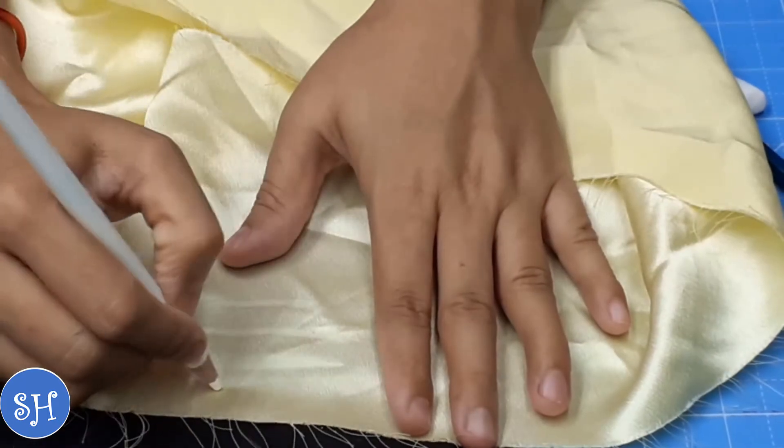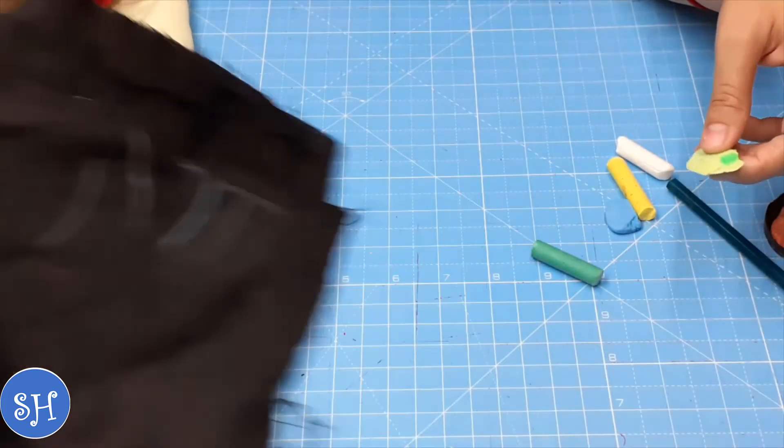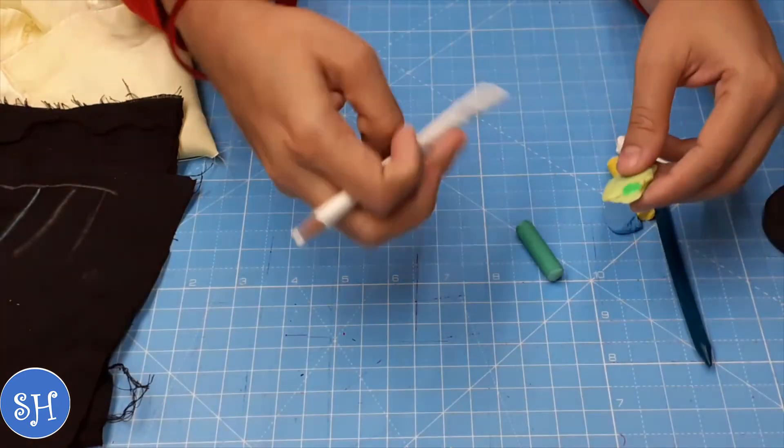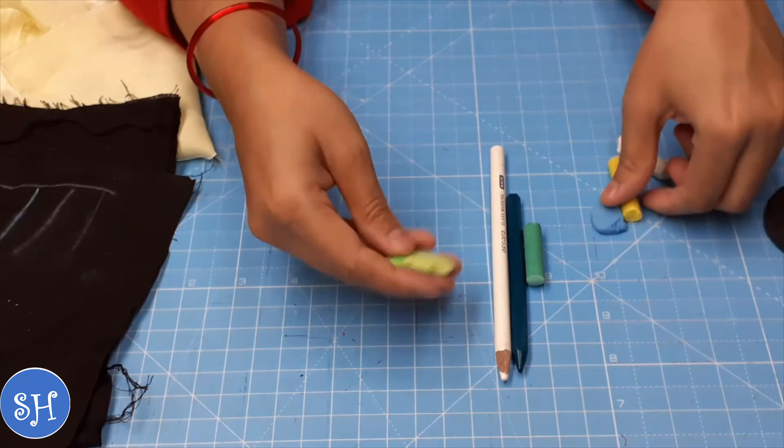I don't like white pencils. My favorite is soap. So these are different types of chalks I use for my sewing projects.